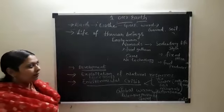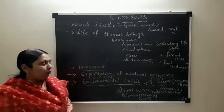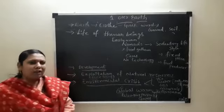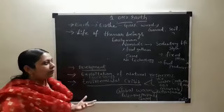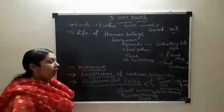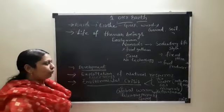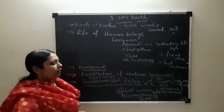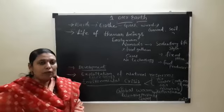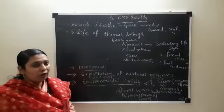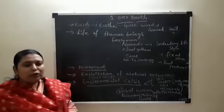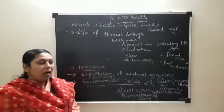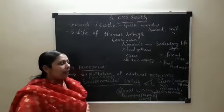Human life started on earth nearly 1 lakh years ago. We first started as early man — he ate raw food, was a food gatherer, lived in caves, had no technology, and completely lived as a nomad. Nomad means moving from one place to another in search of food. After the invention of fire and agriculture, his lifestyle completely changed.